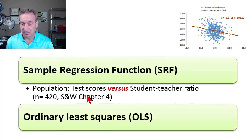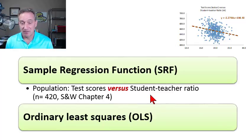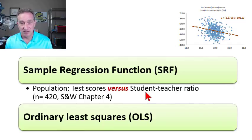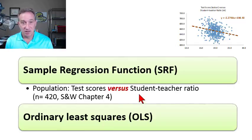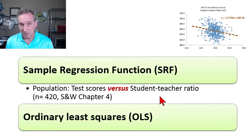We have student test scores — scores on something like the SAT, in the range of 500 to 600 or so. We also have the student-teacher ratio in the classroom — values like 15, 20, 25, representing the ratio of students per teacher. So we'll look at the theory of the sample regression function.